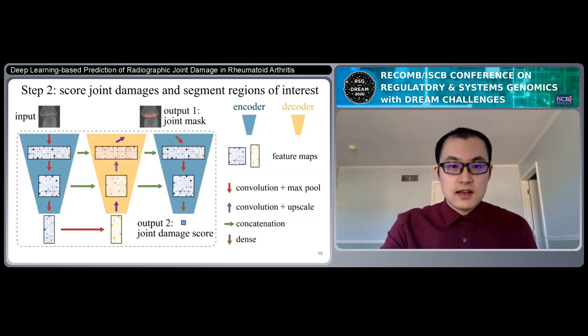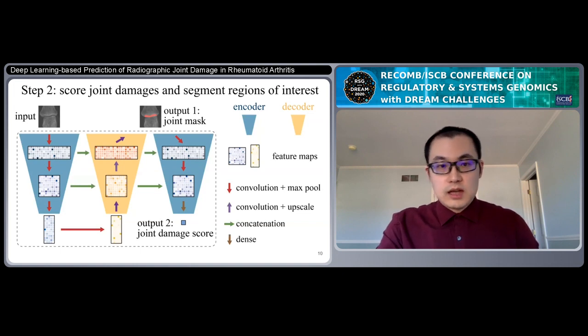I need to emphasize that this special design not only can improve the prediction performance for joint damage score, but also it will highlight the regions of interest. This will be potentially helpful for radiologists to further examine the original image and to make decisions in clinical settings.